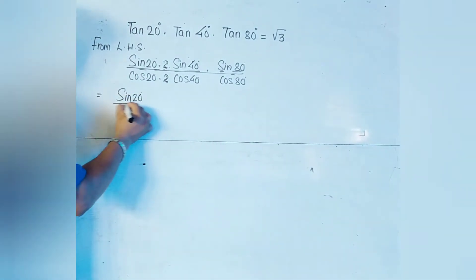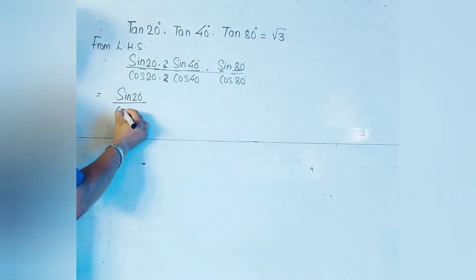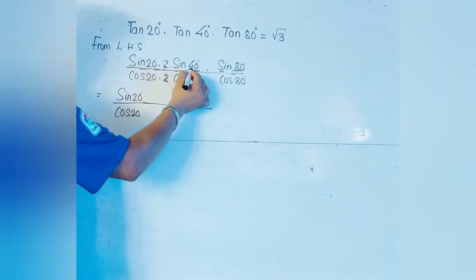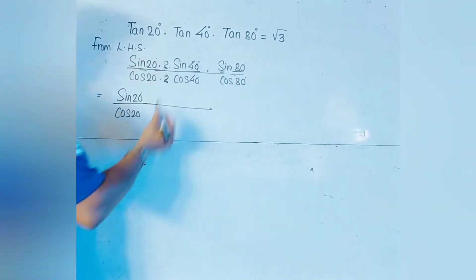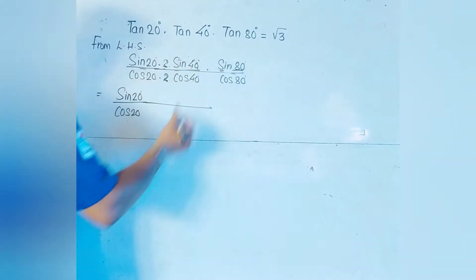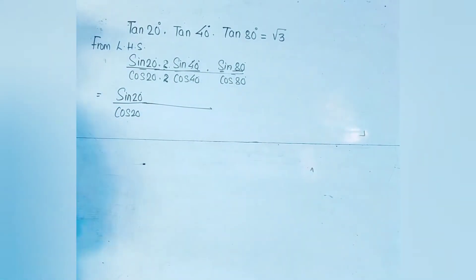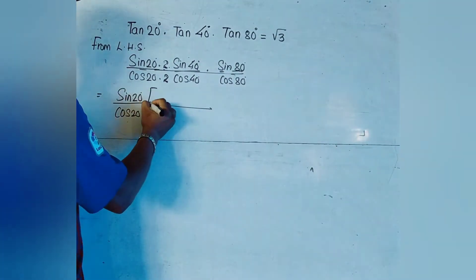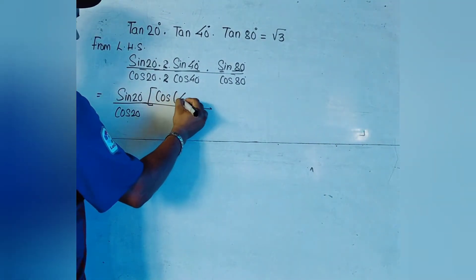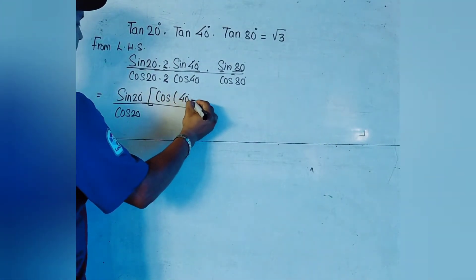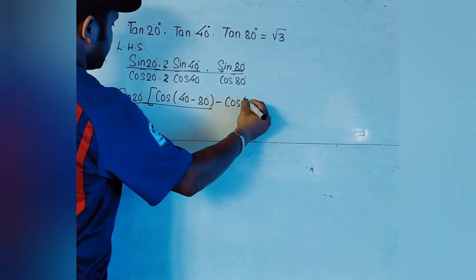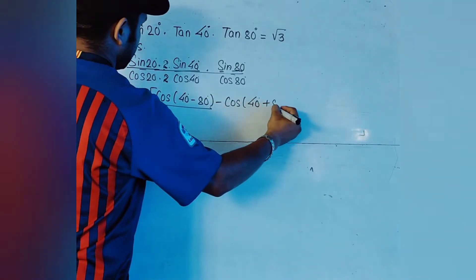We write sin20° / cos20° as it is, and use the formula for 2sinAsinB. We assume A = 40° and B = 80°. The formula for 2sinAsinB is: cos(A − B) − cos(A + B).